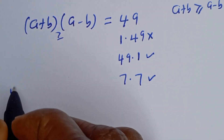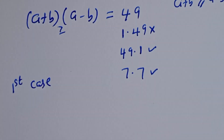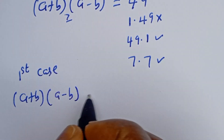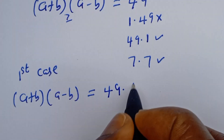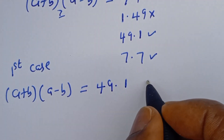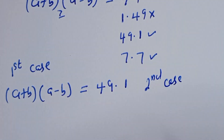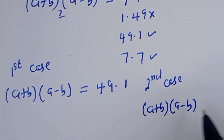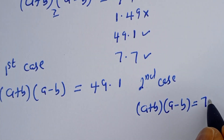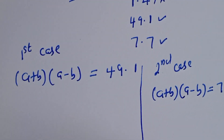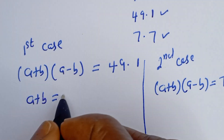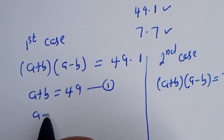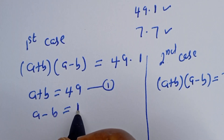The first case is A plus B multiplied by A minus B will be equal to 49 multiplied by 1. So A plus B is equal to 49 — let's call this equation 1. Then A minus B is equal to 1 — let's call this equation 2.